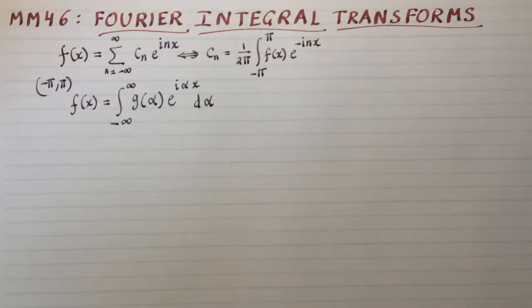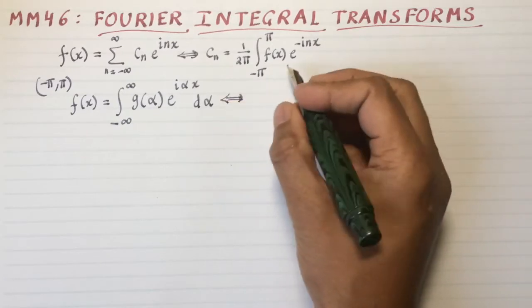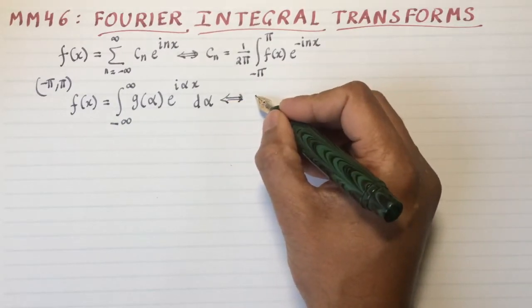So that is the complete analog of the regular complex Fourier series. And what would be the way of extracting the function g of alpha?